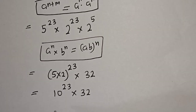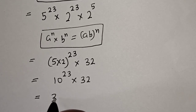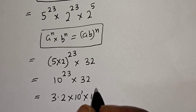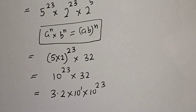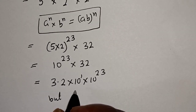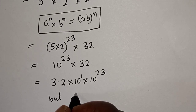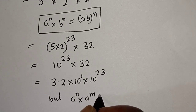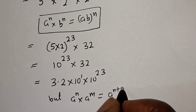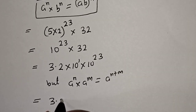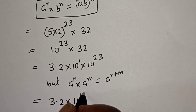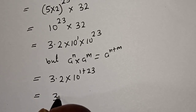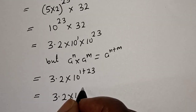In order to put this in standard form, we have 3.2 times 10 raised to power 1, times 10 raised to power 23. But a raised to power n multiplied by a raised to power m is equal to a raised to power n plus m. Then this is equal to 3.2 times 10 raised to power 1 plus 23, which equals 3.2 times 10 raised to power 24.